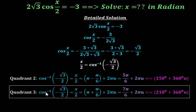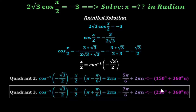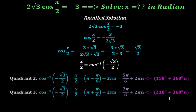In the third quadrant, x/2 = π + π/6 + 2πn = 7π/6 and all its coterminals, which in degrees is 210° + 360°n. So those are the two solutions: 150° and 210°, which are second quadrant and third quadrant, which is 5π/6 and 7π/6 and all their coterminals.